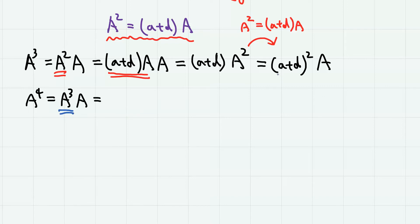Here, this A cubed can be expressed like this. So we have A plus D squared A times A, and again, by this, we have A plus D cubed A,